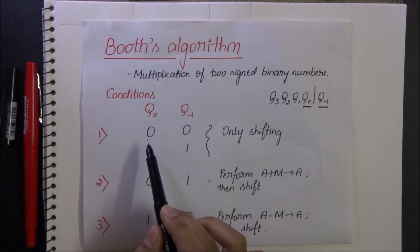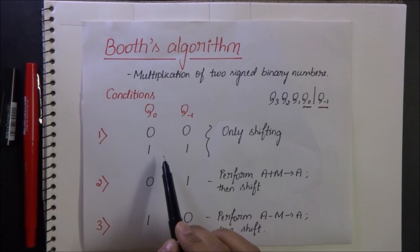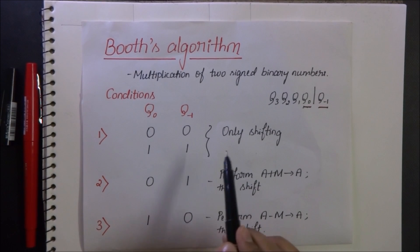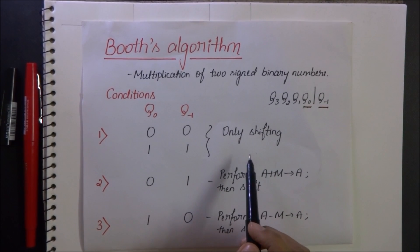In the first case, Q0 and Q-1 are equal. They are either 0-0 or 1-1. In such a case, we perform only shifting right operation.